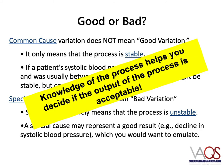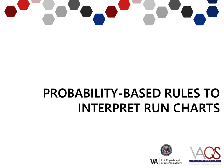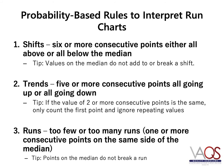In summary, both common cause variation and special cause variation offer opportunities to learn about system performance. This knowledge of the process helps you decide if the output of the process is acceptable. Next, we are going to review three probability-based rules for interpreting run charts for common cause and special cause variation. Although there are many rules that have been developed, our focus will be on the three basic rules you will apply most often. The three rules are shifts, trends, and having too few or too many runs.